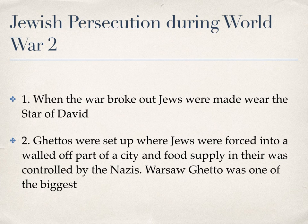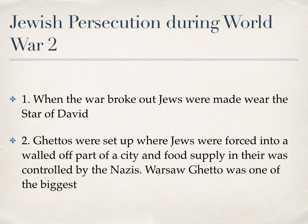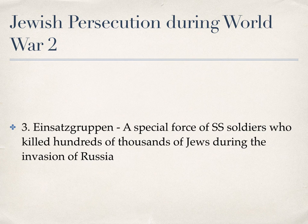Ghettos were areas where Jews were forced into — a walled-off part of the city where the food supply was controlled by the Nazis. One of the most famous ghettos is the Warsaw Ghetto, one of the biggest. Accounts suggest the food allowance for people in the ghettos was something like 184 calories, which is completely insufficient to feed anybody.